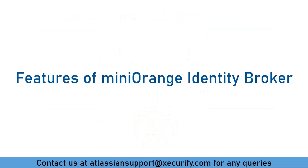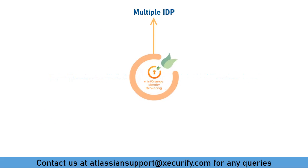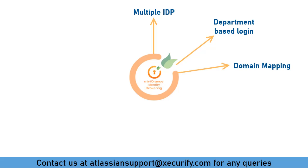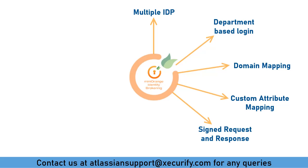Let's see a few features of MiniRange Identity Broker. Multiple IDPs: you can configure multiple identity providers to authenticate different types of users with different IDPs. Multiple department-based login allows users to redirect to their IDP based on their department. Domain mapping allows users to redirect to their IDP based on their email domains. Custom attribute mapping is a provision to update the user profile attributes in the application with the user attributes received from the IDP. Secure your SSO with signed requests and encrypted SAML assertions.